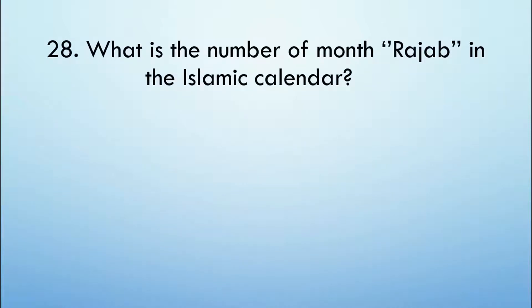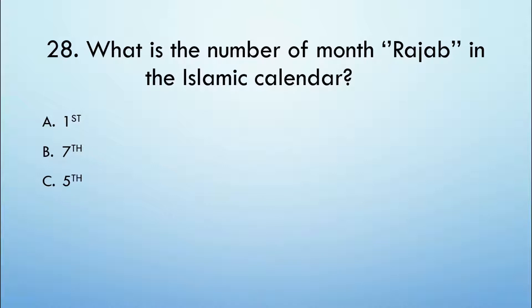Question number 27: What is the number of the month Rajab in the Islamic calendar? A: First. B: Seventh. Option C: Fifth. Option D: Eleventh. And the correct option is Option B, Seventh.